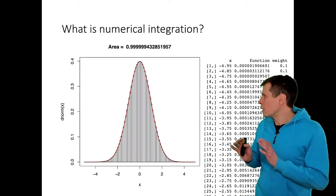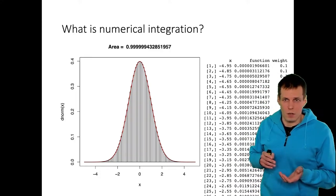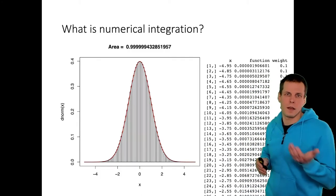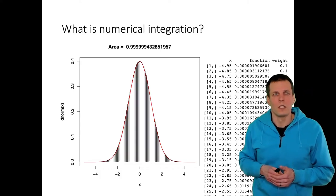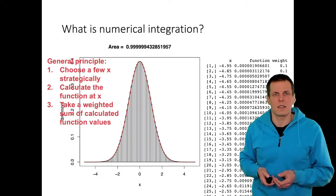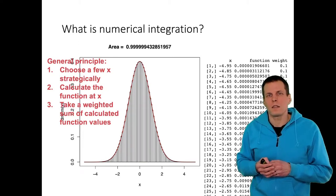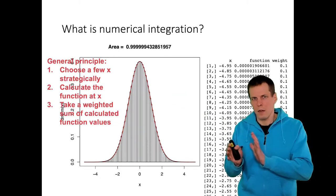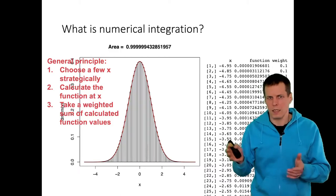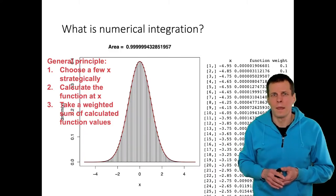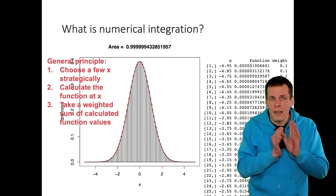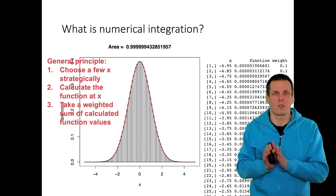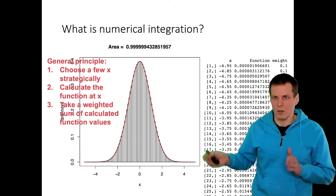Normally when learning about numerical integration we use equally spaced bars with equal weights. But the general strategy is that we don't use equal weights — instead we strategically choose a small number of x values, perhaps 5, 7, sometimes 12 or 16, calculate the function value at those strategically chosen points, and then weight them differentially rather than taking them equally spaced.